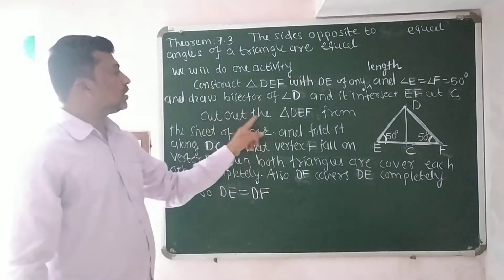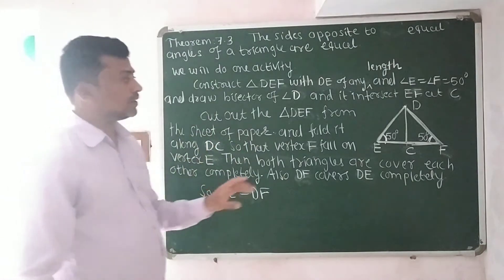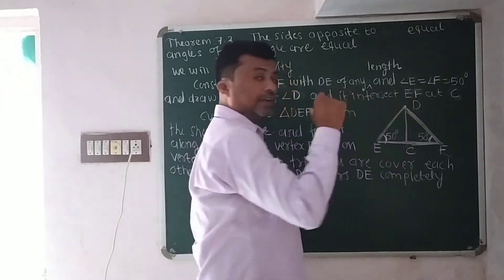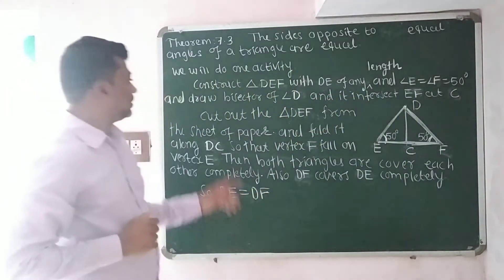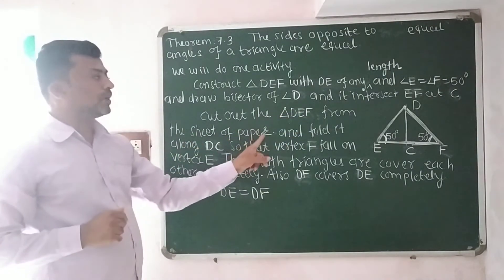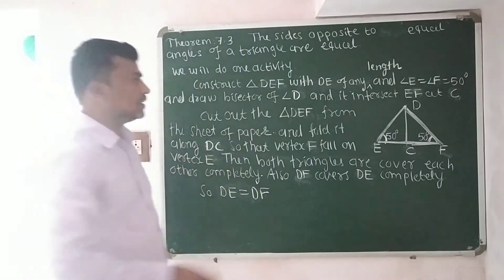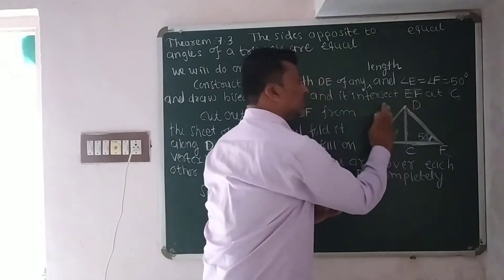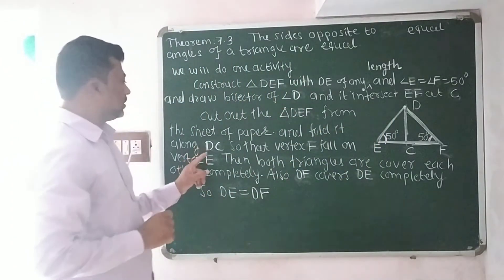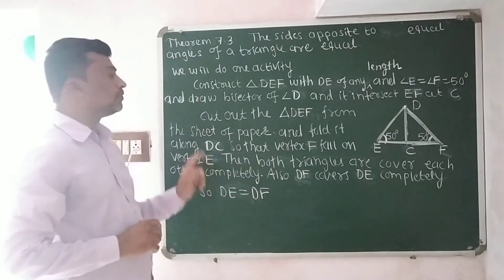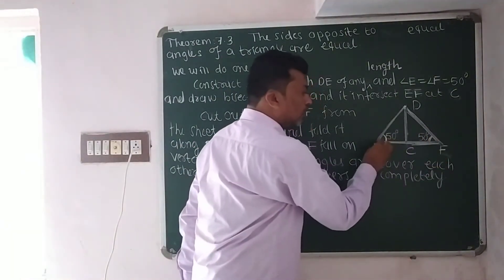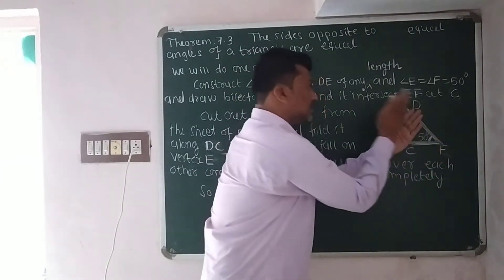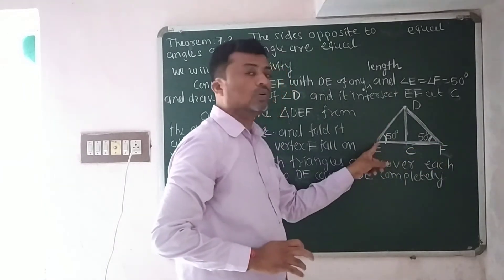Now cut out the triangle DEF from the sheet of paper. With the help of scissors we can cut out triangle DEF from the sheet of paper, and fold it along DC. When we fold, vertex F falls on vertex E.